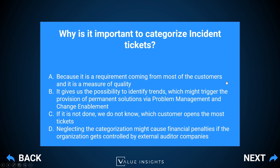Answer C — that without categorization we don't know which customer opens the most tickets — doesn't make sense because we can run reports on who opens tickets, and it's not even a relevant metric most of the time. Answer D — that neglecting categorization might cause financial penalties from external auditors — might be true in some cases, but ITIL doesn't talk about that. We should do categorization to identify trends, so the correct answer is B.